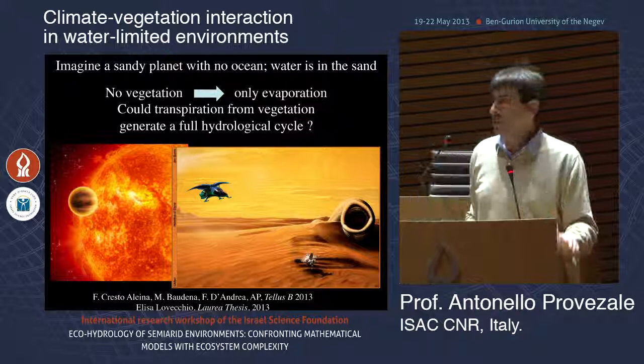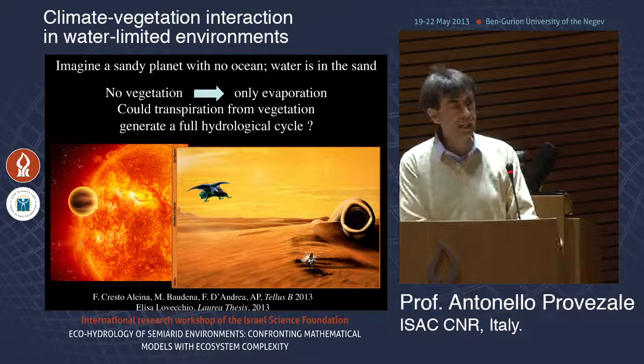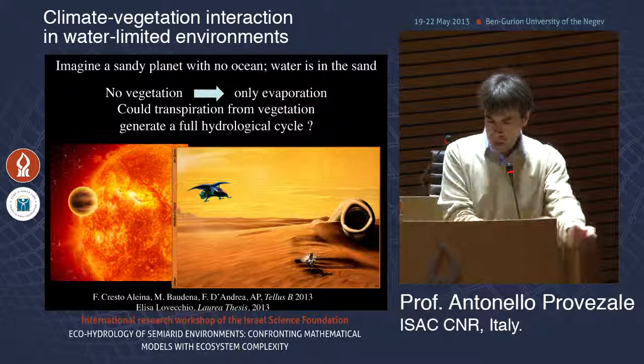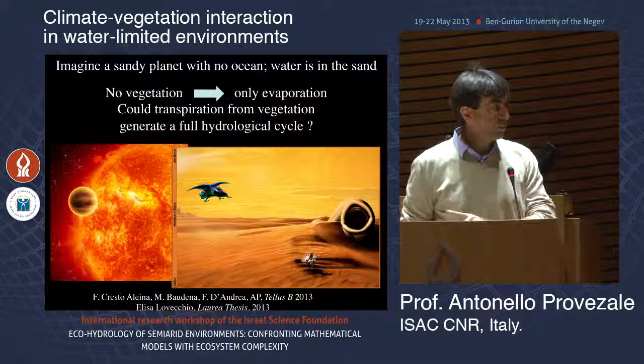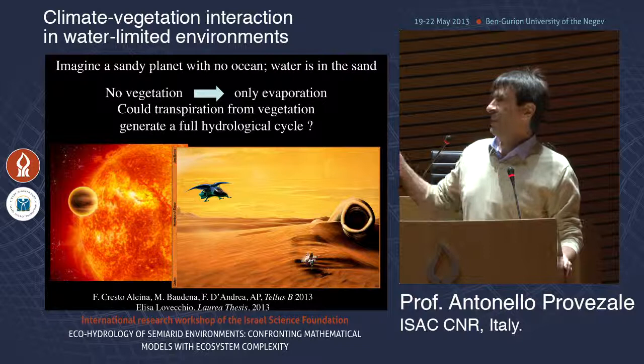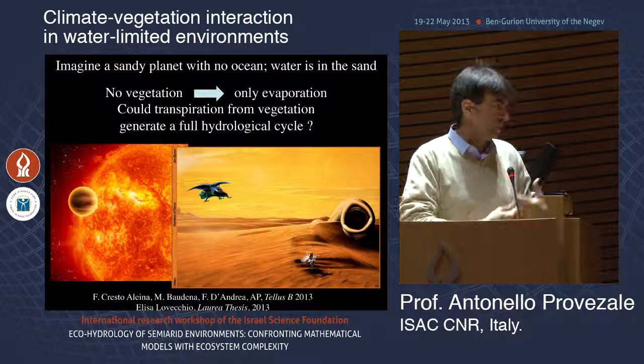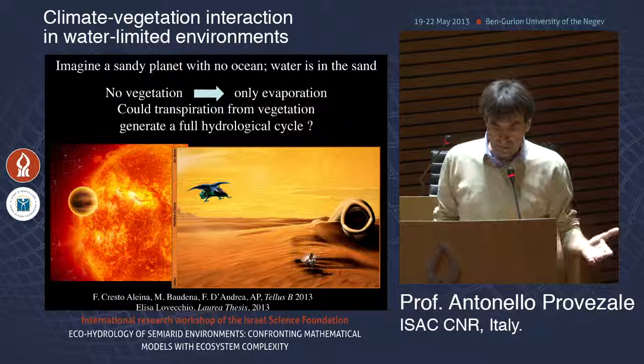Given this, we can go to 'deep space.' Suppose we want to study the importance of vegetation in the hydrological cycle more extremely — think of a planet like Arrakis, the planet Dune from Frank Herbert's novels, covered with sand (we didn't put worms in the model yet). There is water in the sand: with no vegetation you have only evaporation, but with vegetation you also have transpiration, which can reach deeper water. Can vegetation sustain itself?